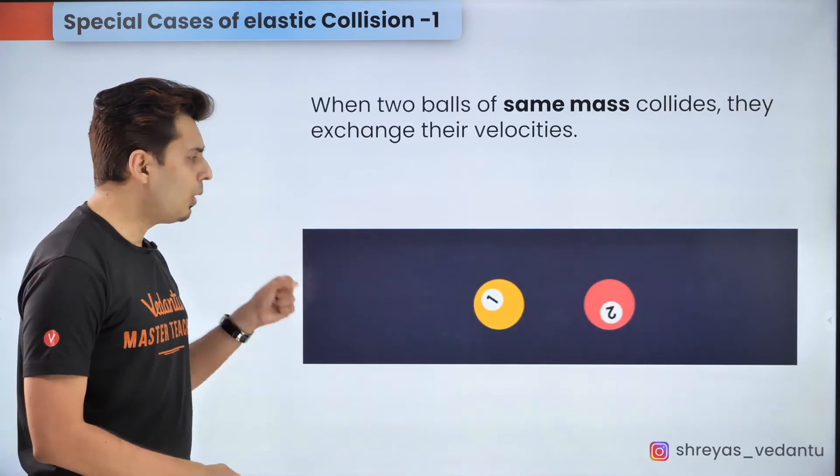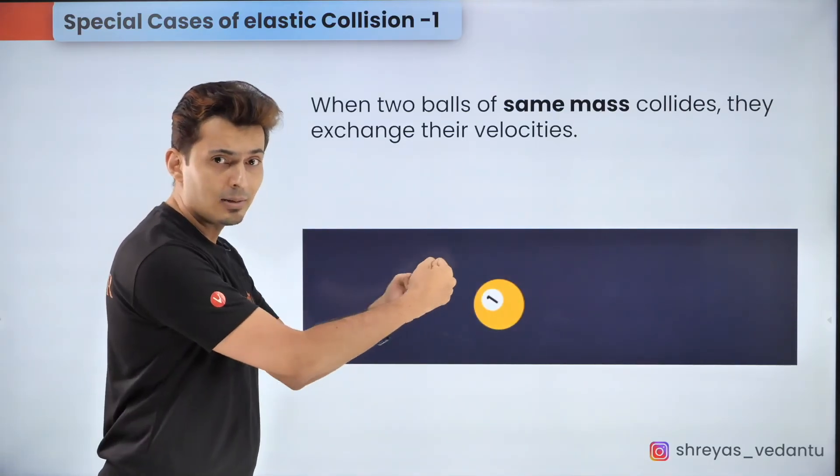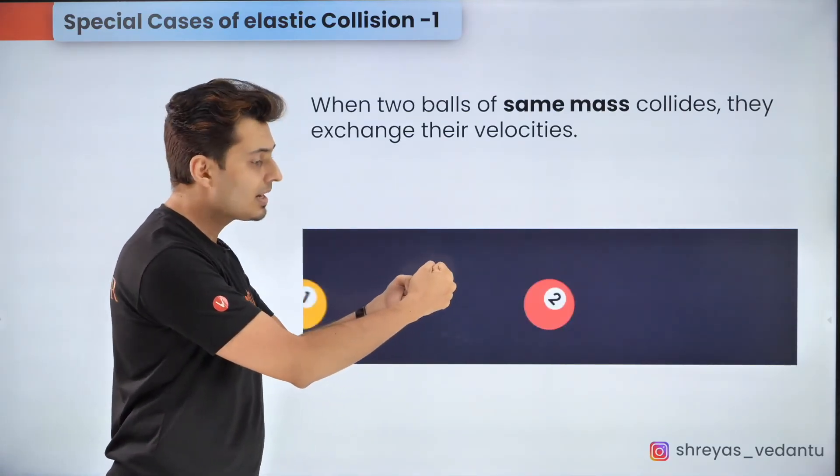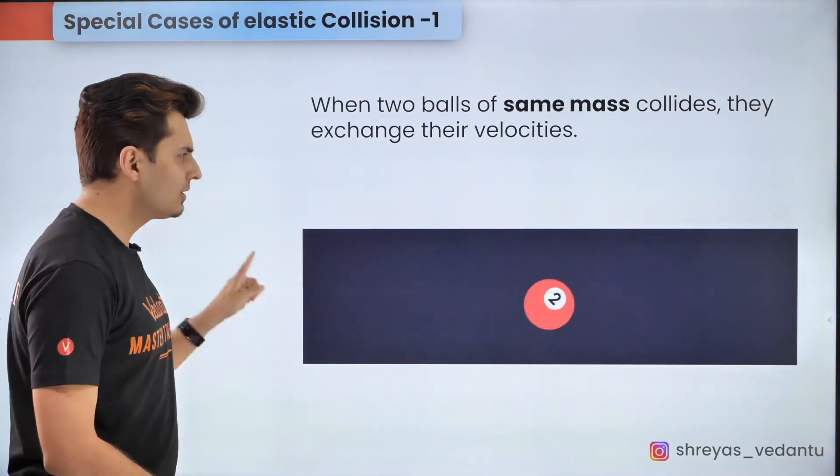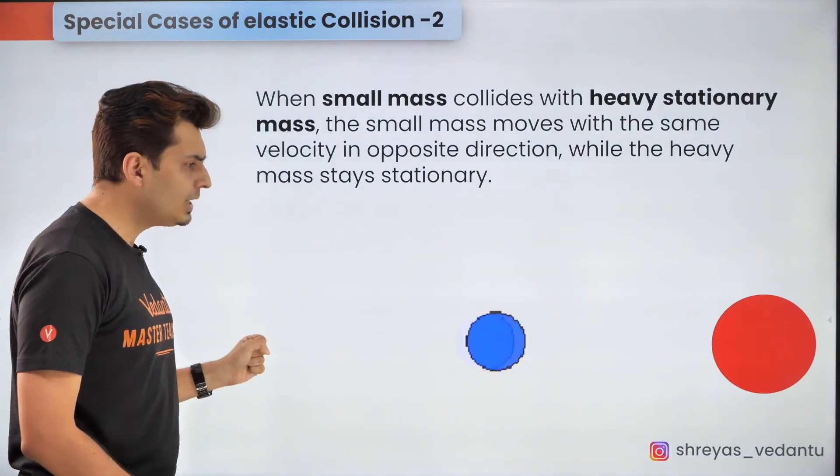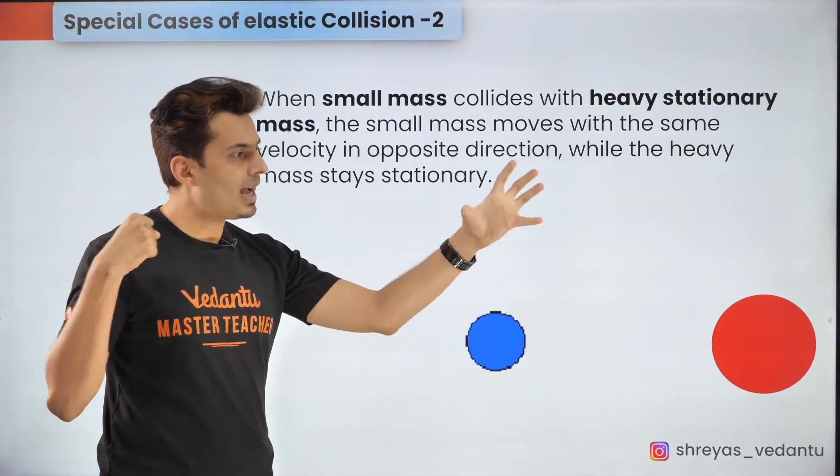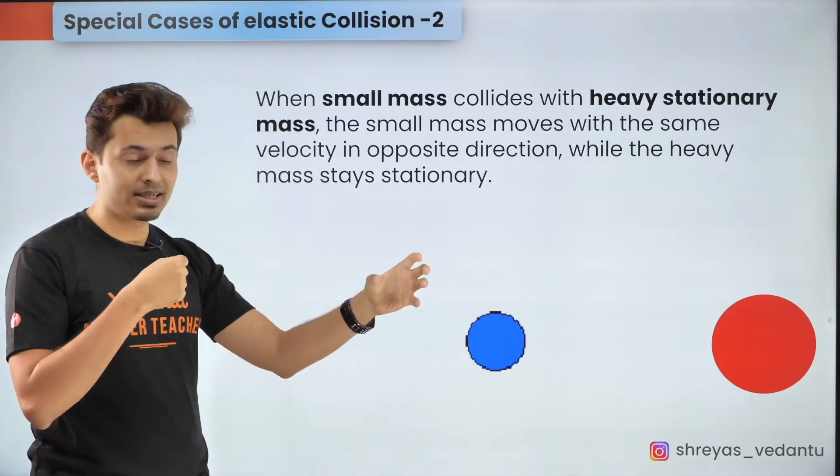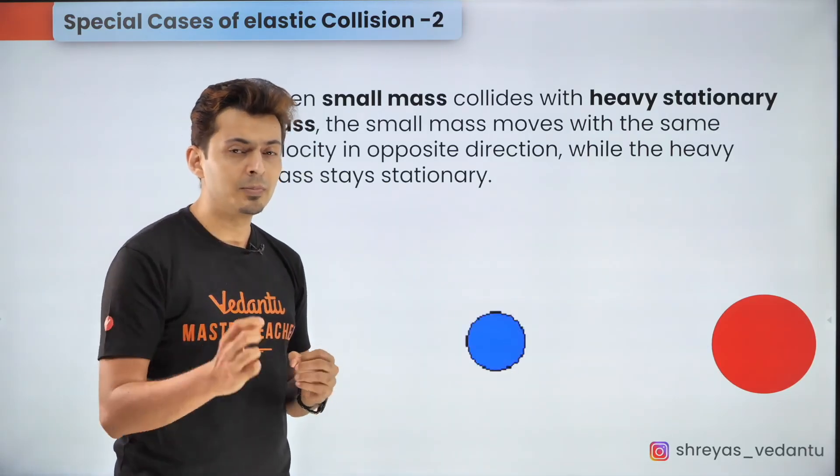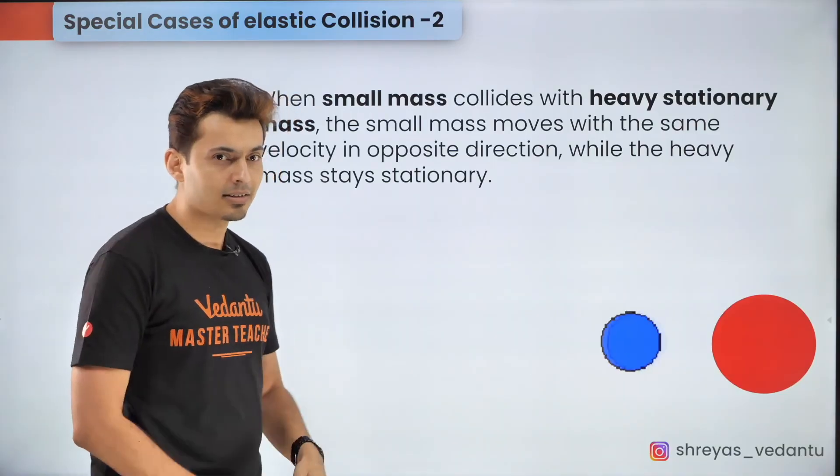Also remember this that if a tiny object collides with a very massive object which is at rest then after the collision the tiny object comes back with the same speed and the big object remains there as it is.